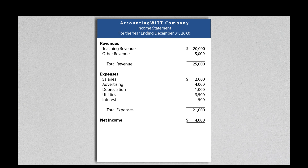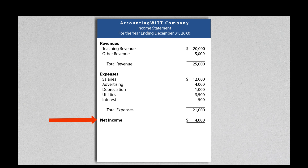The income statement is made up of two general types of accounts: revenues and expenses. Net income is computed by taking the company's revenues and subtracting the company's expenses for the period. When expenses are greater than revenues, then there is said to be a net loss. For GAAP purposes, the income statement is prepared using the accrual method of accounting under most circumstances.